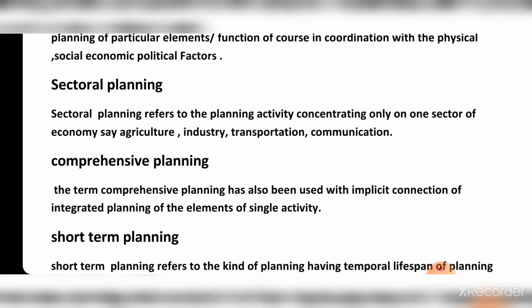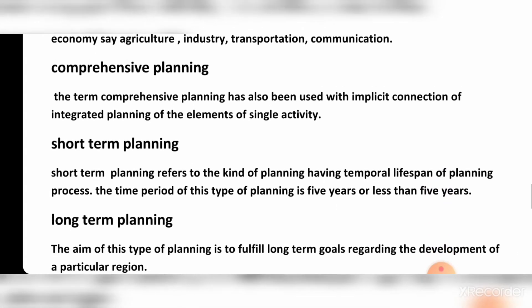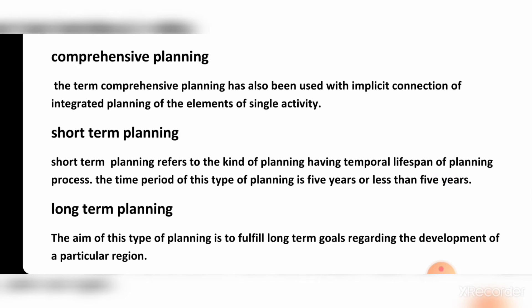Sectoral planning refers to planning activity concentrating only on one sector — economics, agriculture, industry, transportation and communication. Each sector is planned separately. Comprehensive planning is wide and connected planning; the term has also been used with the implicit connection of integrative planning of elements of a single activity.